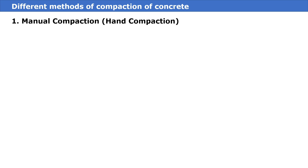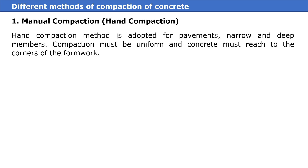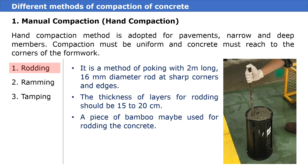First is manual compaction, also known as hand compaction. Hand compaction method is adopted for pavements, narrow and deep members. Compaction must be uniform and concrete must reach to the corners of the formwork.